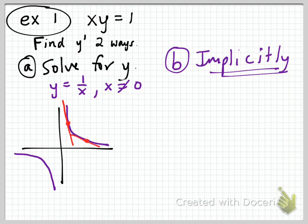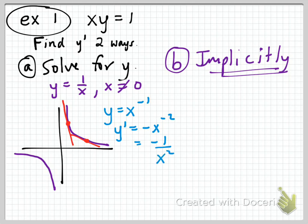At different places along the graph, we're going to have a slope of a tangent line. We can use the power rule if we write it as y equals x to the negative 1. Then y prime equals negative 1 times x to the negative 2, or written with positive exponents, negative 1 over x squared.